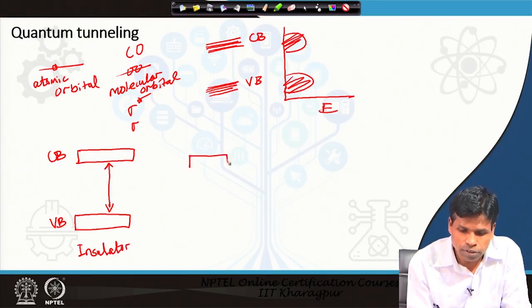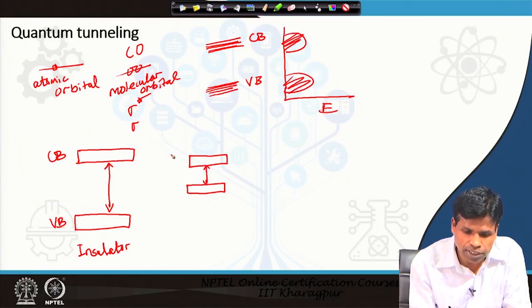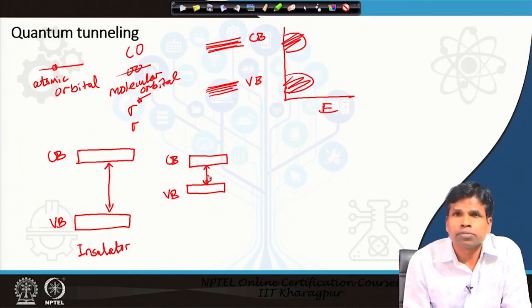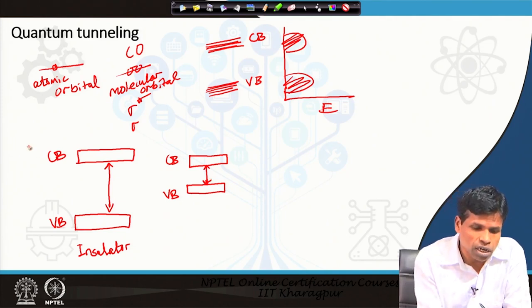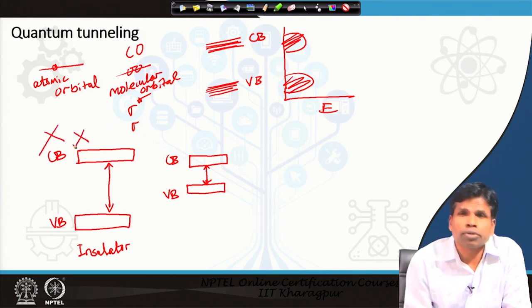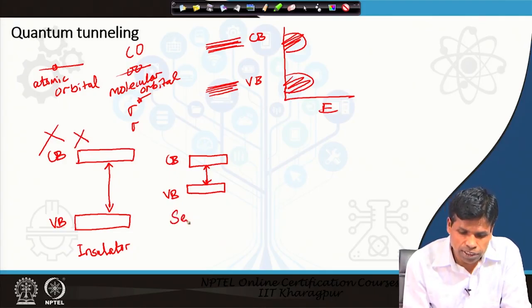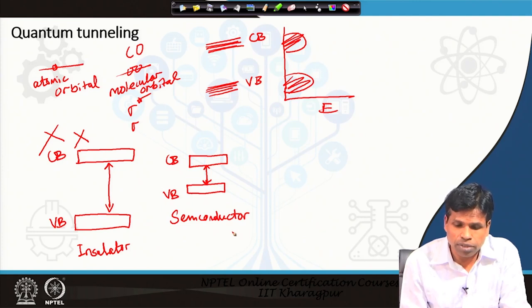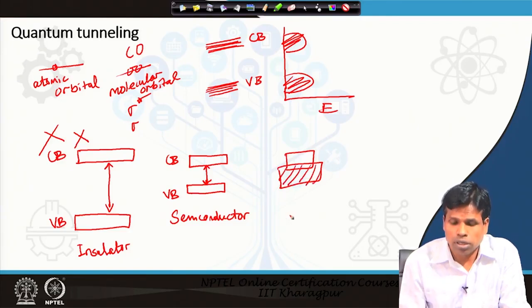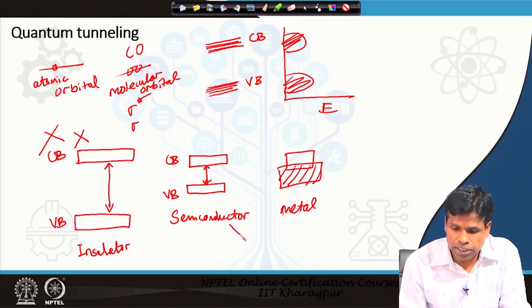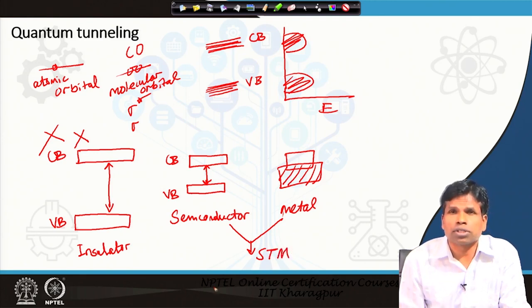Then we can have a semiconductor, where there is a small gap between the valence band and conduction band, which can be used for scanning tunneling microscopy study. It is to be noted that insulating samples cannot be studied by scanning tunneling microscope, but semiconducting samples can be used for STM measurements. Then we can also have a metal, where the valence band and conduction band overlap. Both metals and semiconductors can be examined under STM.